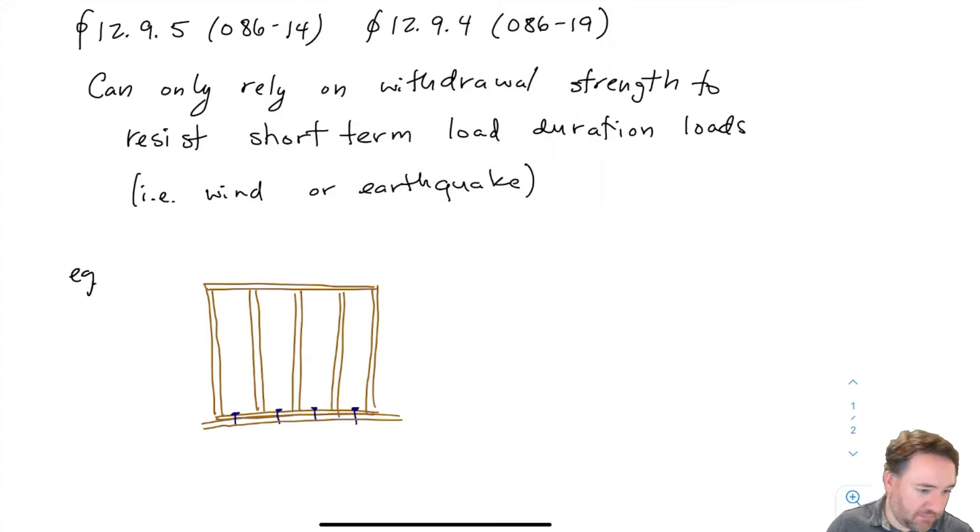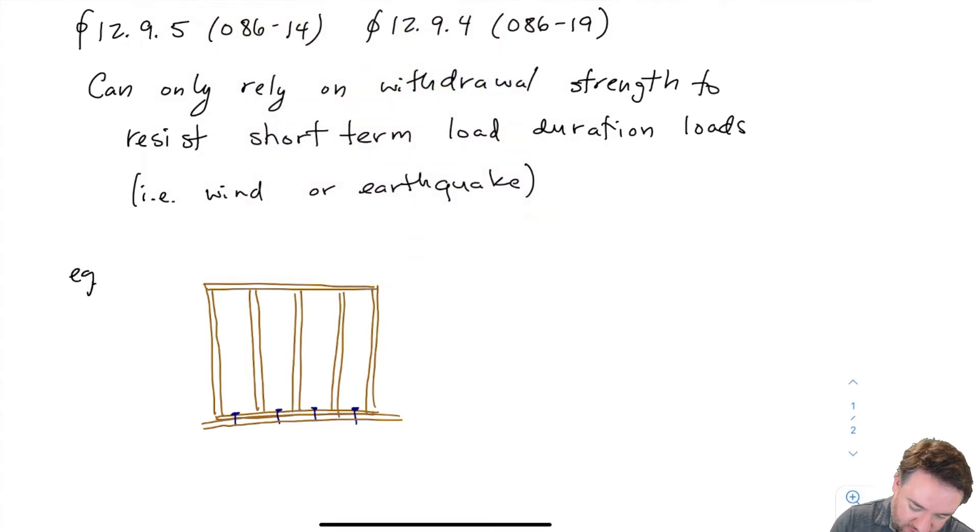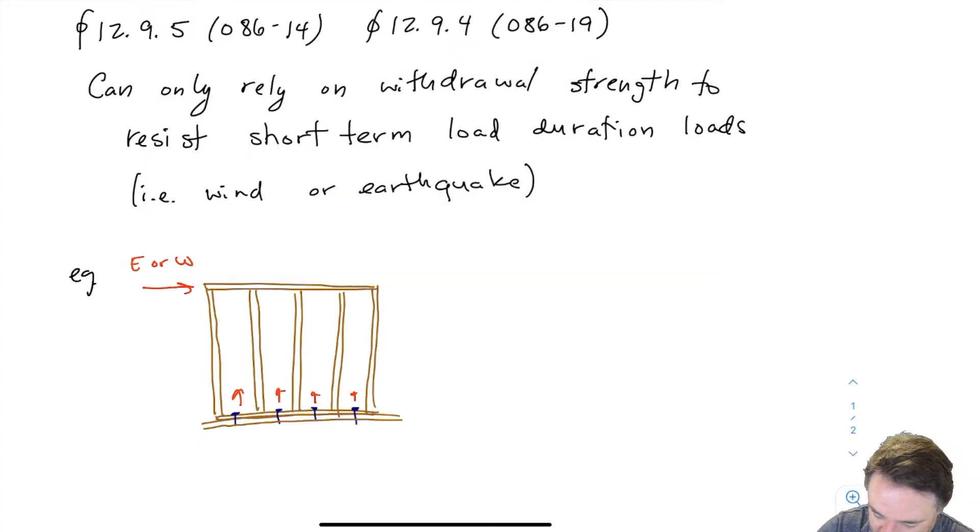Usually we use a bolted connection for a hold down but let's say that my load was so low that I could do it with nails. Then you know I could resist a lateral earthquake or wind like that for withdrawal. These want to withdraw out of the bottom piece that they're nailed into, not a realistic type of connection.